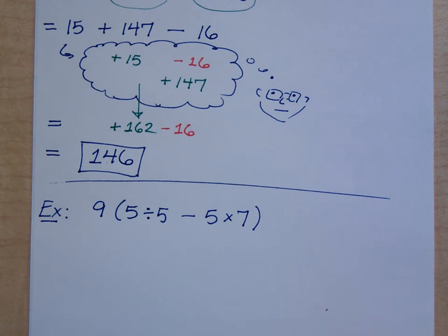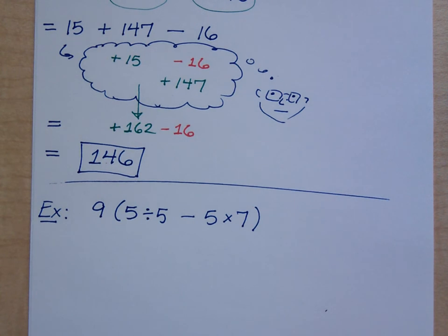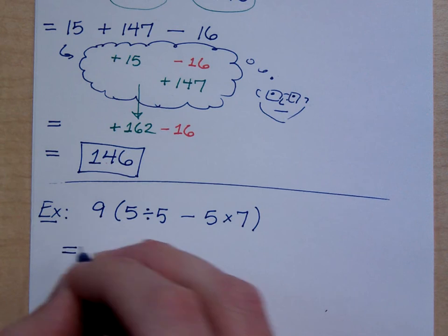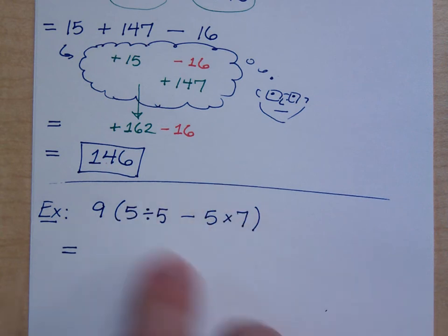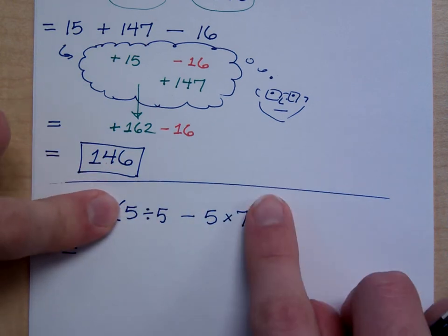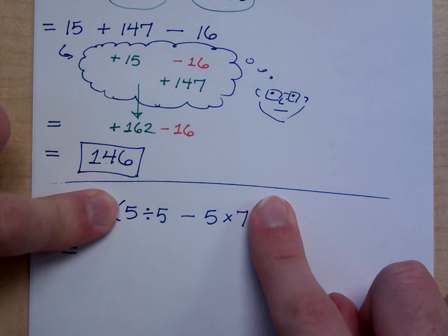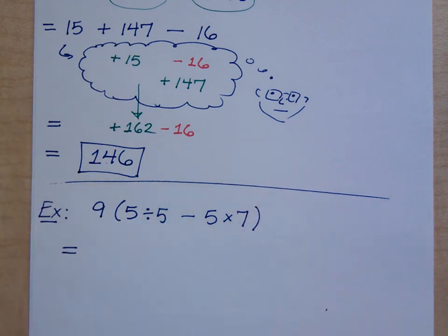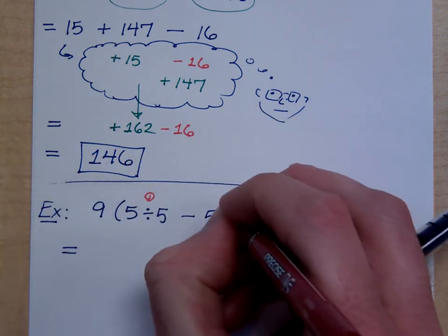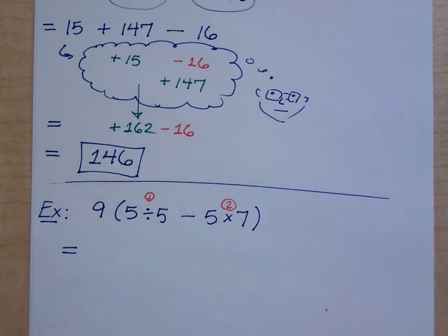Now let's look at this one: 9 times the quantity 5 divided by 5, minus 5 times 7. So what do I do first here? First I've got parentheses, so I can't do 9 times anything yet. I've got to take care of all this stuff inside here. When I look inside, I see I've got division, subtraction, and multiplication. No other parentheses, no exponents. I do multiplication and division from left to right, so the division comes first, then the multiplication second.